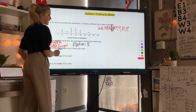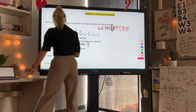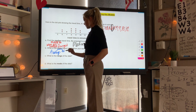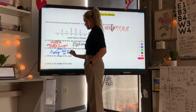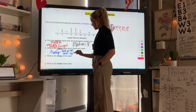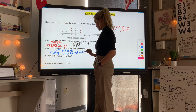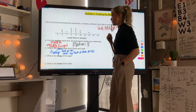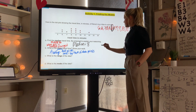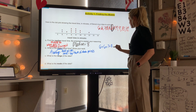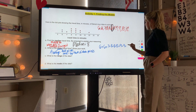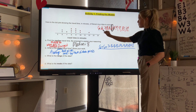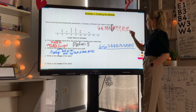Next, the mean. Think of the mean as the meanest because it takes the longest — mean is the average. To find the average, add up all the data points: six plus six plus seven plus eight plus eight plus eight plus nine plus nine plus nine plus nine plus ten plus twelve. Whatever that sum is, divide it by how many numbers there are. There are twelve data points, so divide by twelve.